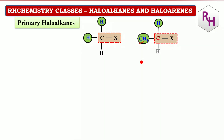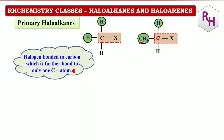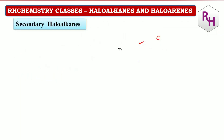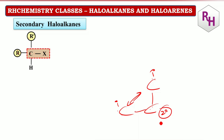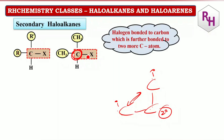So: X attached to carbon which is attached to one more carbon — it is primary. Halogen bonded to carbon which is further bonded to one more carbon is called primary. For secondary: the carbon to which halogen is attached is surrounded by two more carbons — called secondary. Halogen bonded to carbon which is further bonded to two more carbons is called secondary. For example, CH3-CHX-CH3 — the central carbon with X and two carbons is secondary; the end carbons are primary.